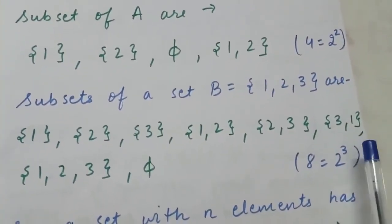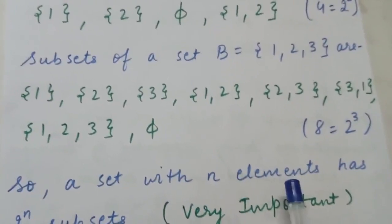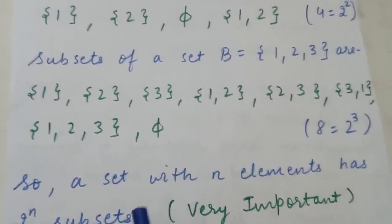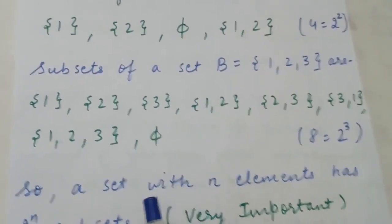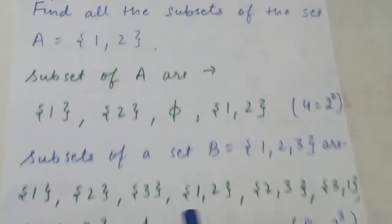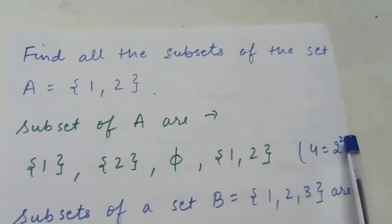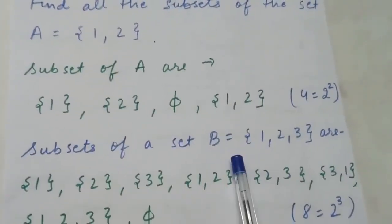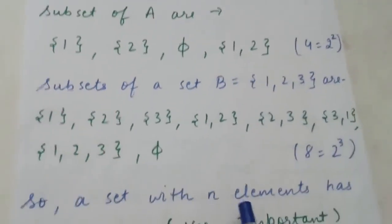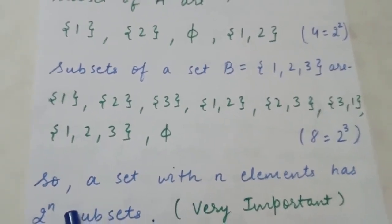Total subsets of B are eight, which can be written as 2³. Here is a very important note: a set which has n elements has 2 raised to the power n subsets. In set A there were 2 elements so number of subsets were 2² = 4; in set B there were 3 elements so number of subsets is 2³ = 8. A set with n elements has 2^n subsets.